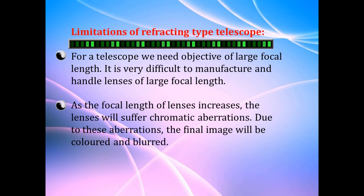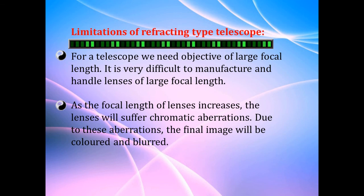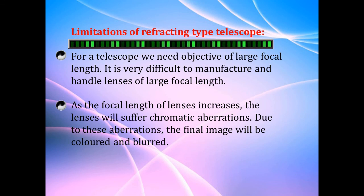Next, we will discuss the limitations of the refracting type of telescope — asked for two marks. Since we use refracting lenses, the objective lens should have a maximum, very high focal length to focus objects very far away, such as the moon, which is thousands of kilometers away. This makes it very difficult to manufacture and handle lenses with large focal length. Another limitation is that lenses with very large focal length produce chromatic aberration — the image will have lines or bands of colors.